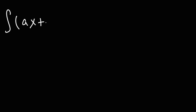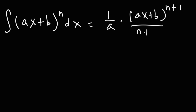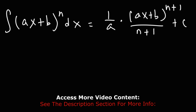The next formula: the antiderivative of ax plus b raised to the n is 1 over a times ax plus b raised to the n plus 1, over n plus 1, plus c. Basically you're applying the power rule to the expression inside.